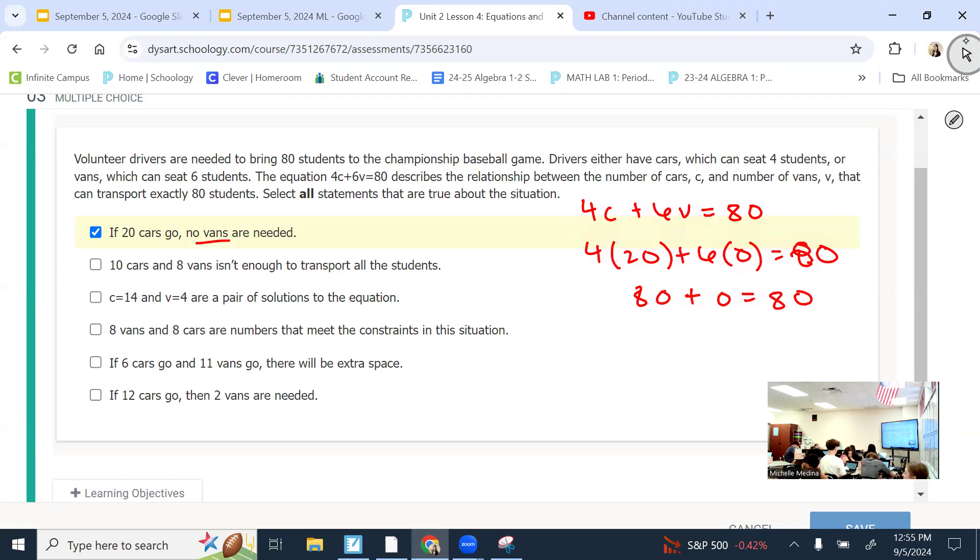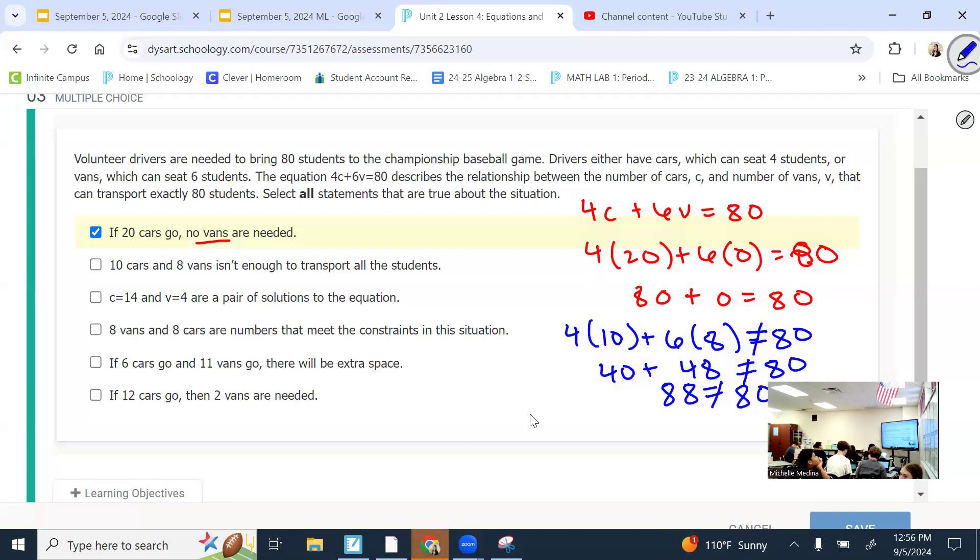So, next we have 10 cars and 8 vans isn't enough to transport the students. What am I plugging in for the C? 10. What am I plugging in for the V? 8. And what this is saying is that it isn't enough. So, we want it to not equal 80. 4 times 10 is 40, 6 times 8 is 48, would you say that 40 plus 48? It's not equal to 80, but would you say that it's because there's not enough? It's because that's too much, right? So, don't pick this one.